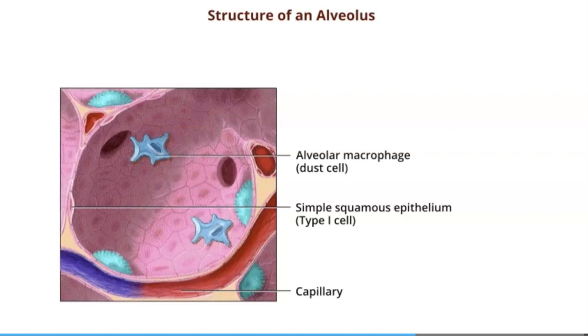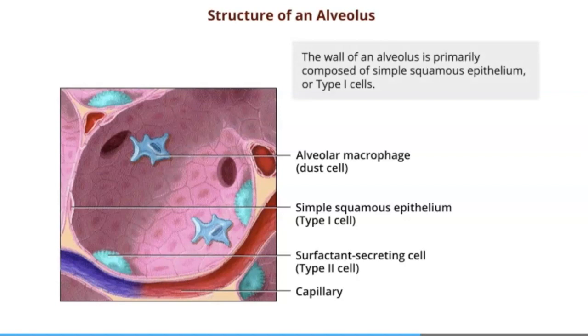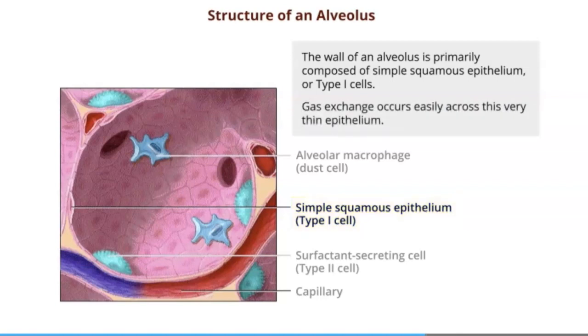type 1 cells, macrophages or dust cells, and type 2 cells. The type 1 cells are the pink ones. They're the most numerous, and just remember type 1 performs the number 1 function, gas exchange.